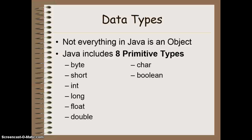As we know, not everything in Java is an object. There are in fact eight different primitive data types. You can see the list of them there: byte, short, int, long, float, double, char, and boolean.